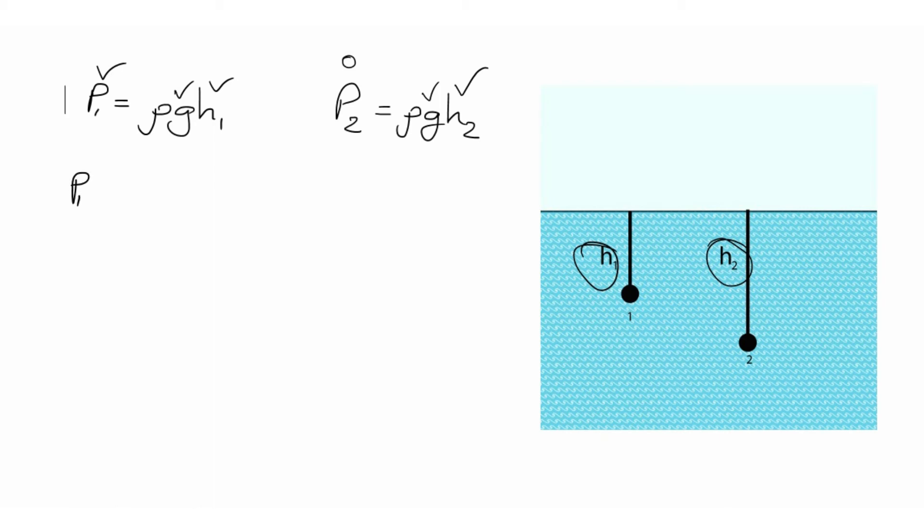So we do P2 over P1 will be equal to rho G H2 over rho G H1. The densities are the same because the variation is negligible. G is the same. So gravity. Then we are left with the ratio of H2 over H1.